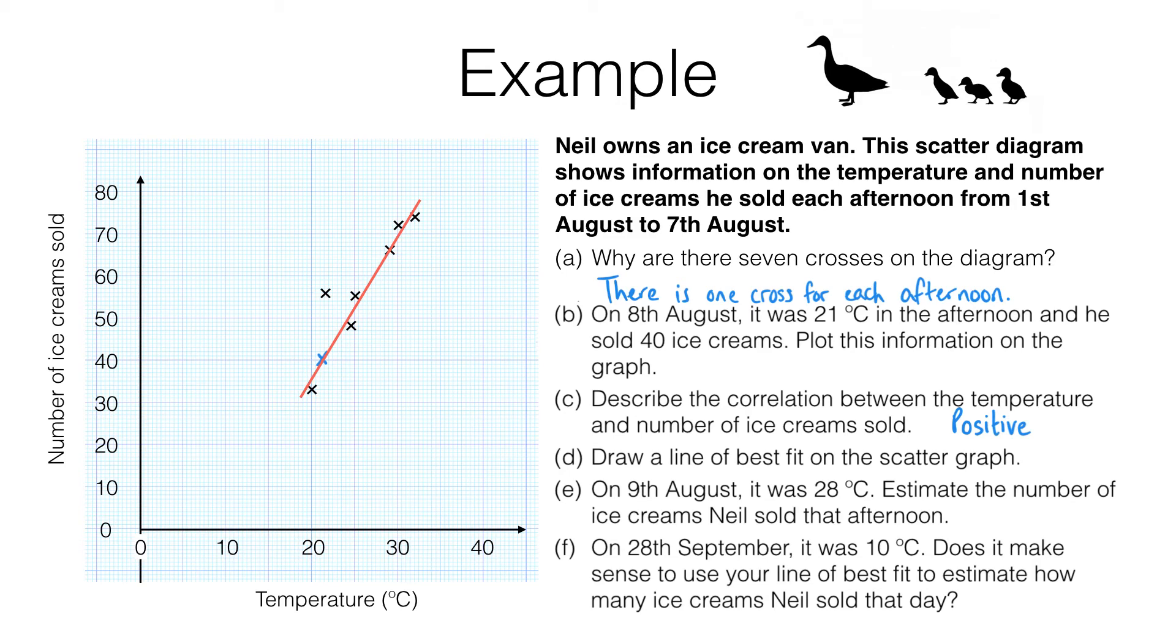In part E, we need to use our line of best fit to estimate the number of ice creams Neil sold on another day when the temperature was 28 degrees. For this, I read up from 28 degrees to the line of best fit, and then I read across and I get 62.